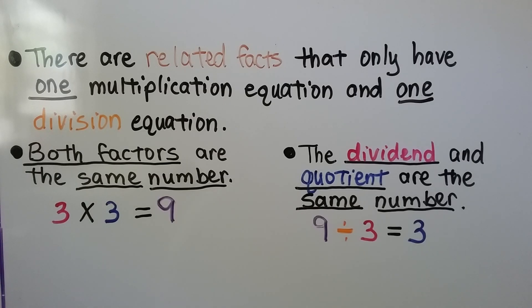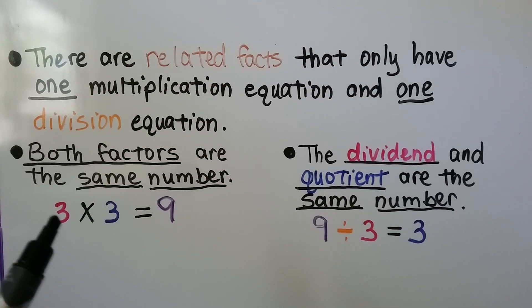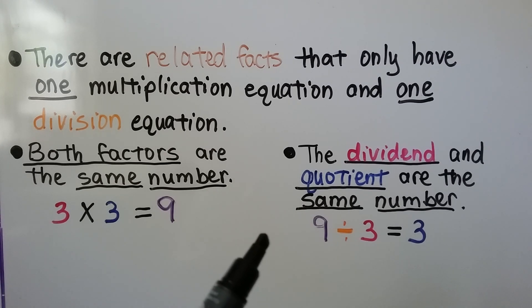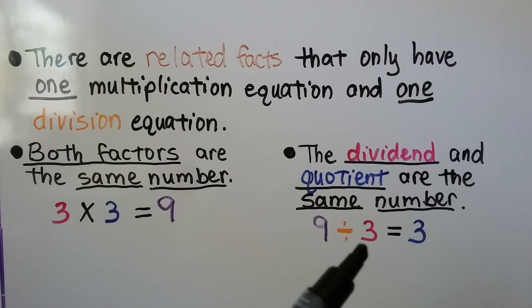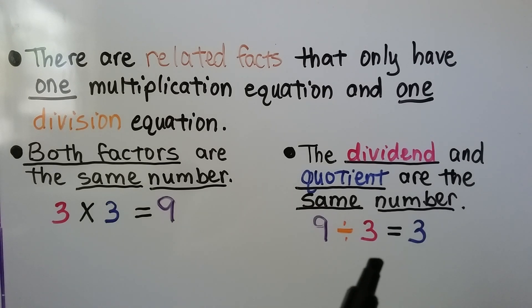There are related facts that only have one multiplication equation and one division equation. Both factors are the same number in this multiplication equation — both factors are a 3, and our product is a 9. In the related division equation, the dividend and the quotient are the same number. When both factors are the same number, there is only one multiplication equation. And when the dividend and quotient are the same number, there is only one division equation.